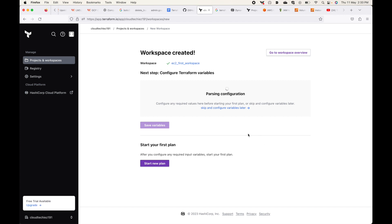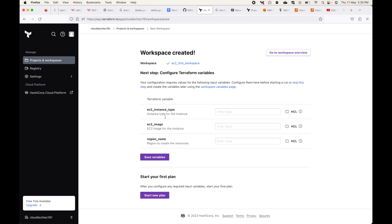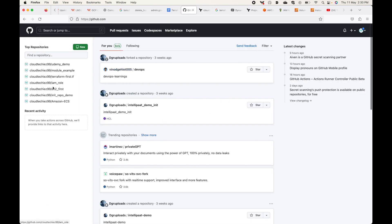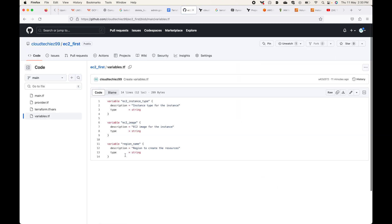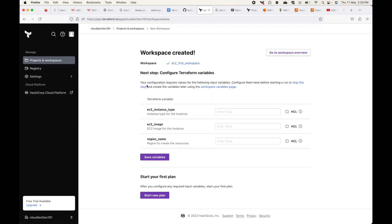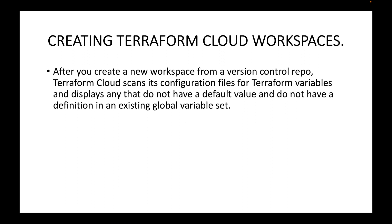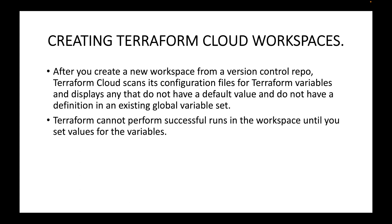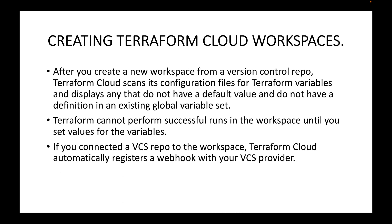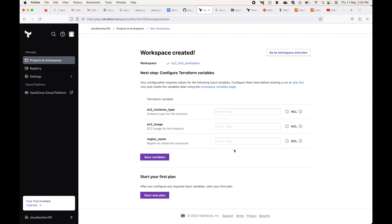After creating the workspace, depending on the configuration files, if you've defined any variables, you'll also have to provide their values. Terraform Cloud will automatically scan the variable names and expect you to pass values for them. After you create a new workspace from a version control repository, Terraform Cloud scans configuration files for any Terraform variables and displays any that do not have a default value or a definition in an existing global variable set. Terraform cannot perform successful runs until you set the values for those variables. If you connected a version control repo, Terraform Cloud automatically registers a webhook with your VCS provider.